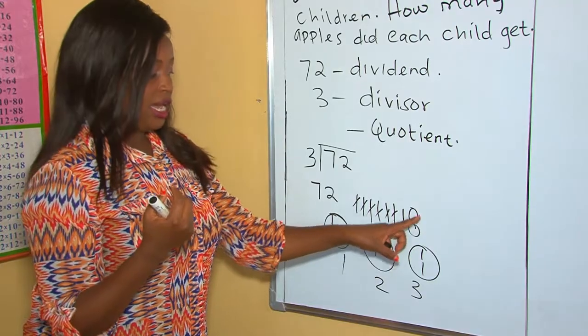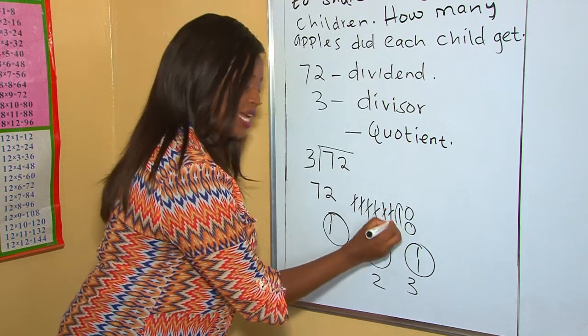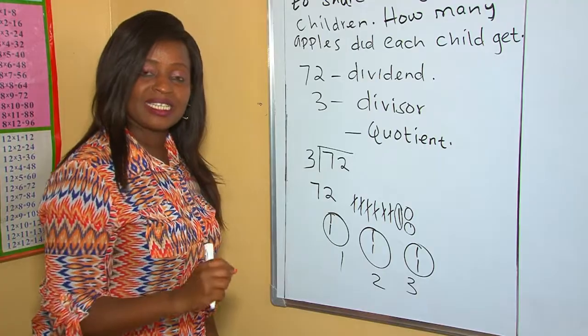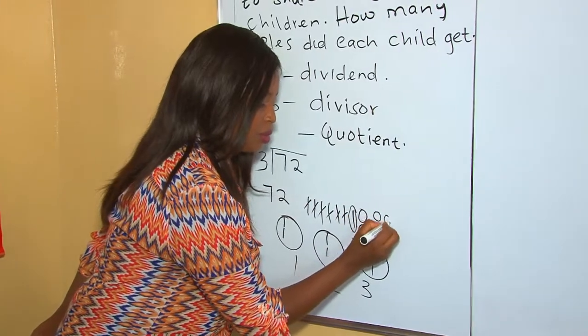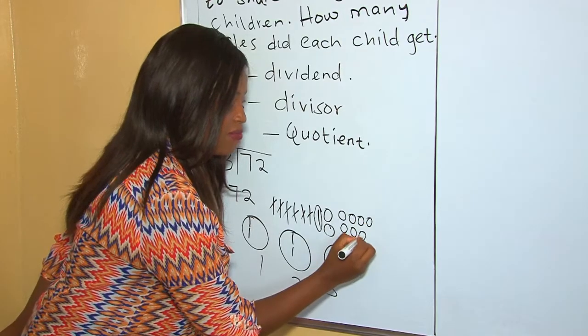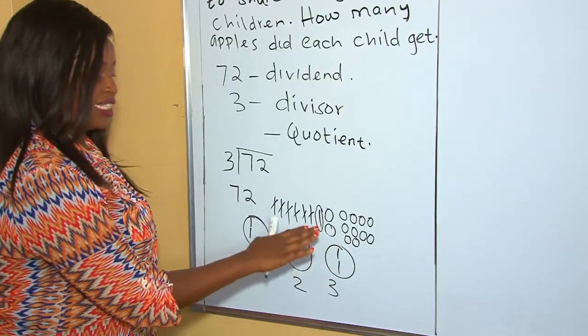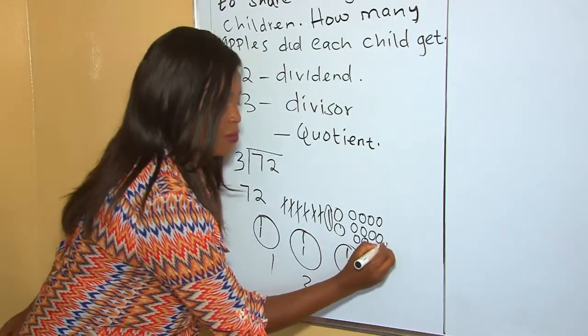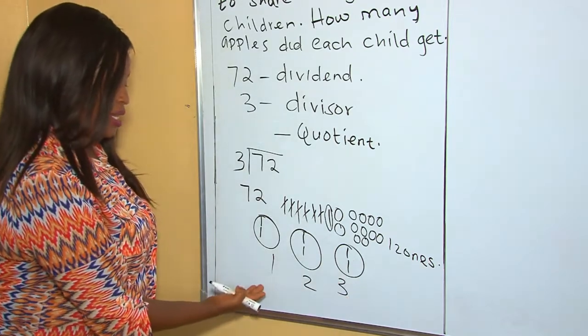Therefore we regroup these tens into ones. How many ones makes one ten? There are ten ones. Therefore we put our ones here: 1, 2, 3, 4, 5, 6, 7, 8, 9, 10. So these are ten ones plus these ones, they become twelve ones.